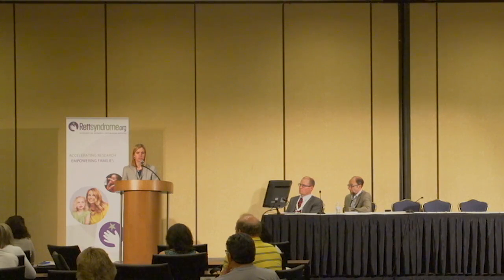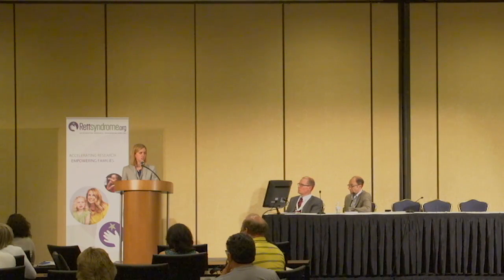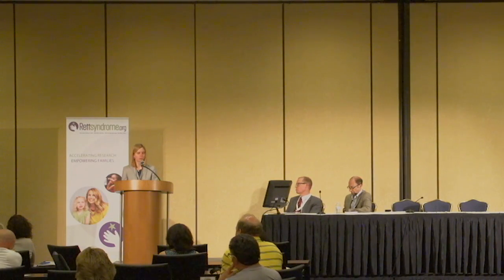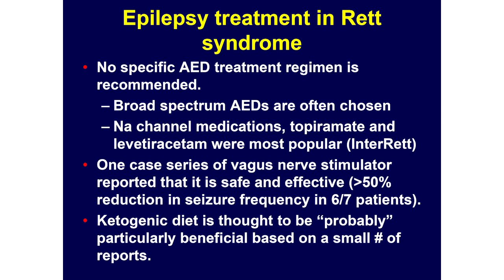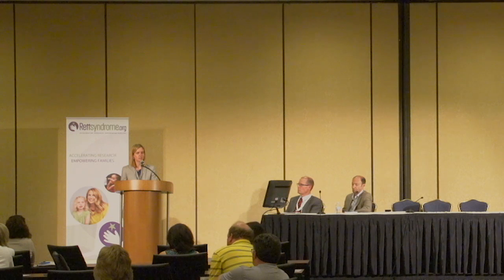In general, broad-spectrum medications are often used because girls can have a combination of focal and generalized epilepsy. Of the ones most frequently used — ones that work through the sodium channel, topiramate, levetiracetam — these are popular based on InterRett data. With regards to non-medication treatments, there's one case series looking at VNS — only seven patients, six had more than 50% reduction in seizures. Ketogenic diet, like with CDKL5, doesn't have great specific data in this population but is considered probably beneficial.